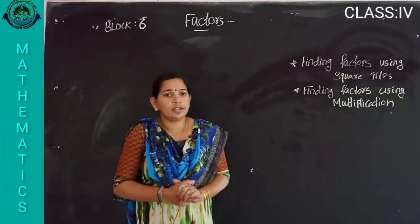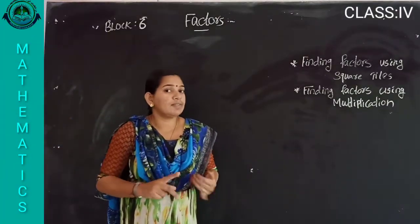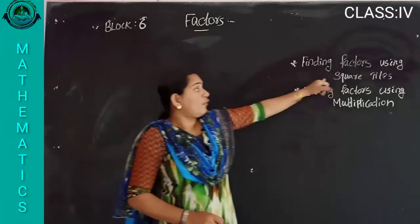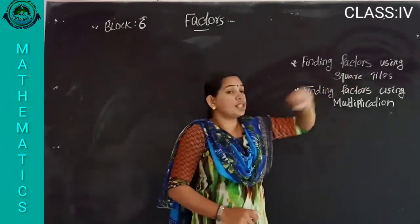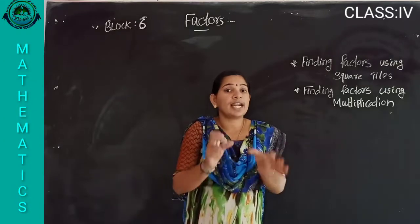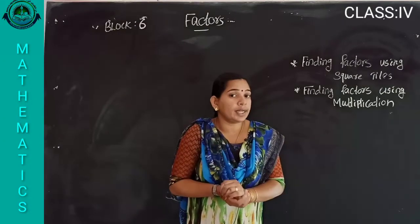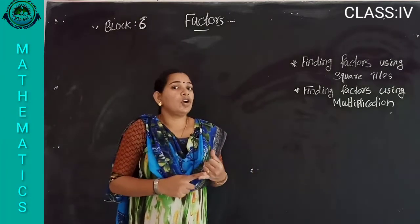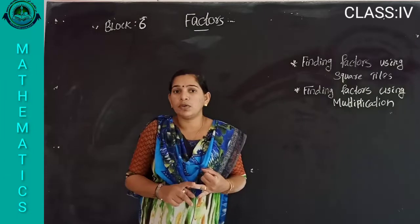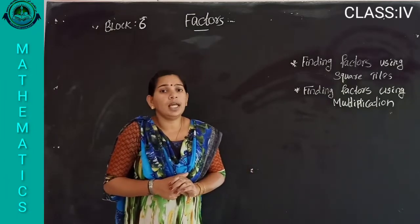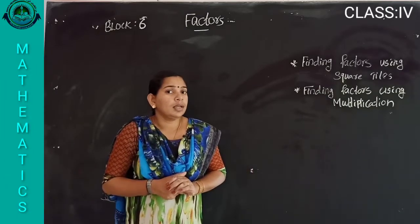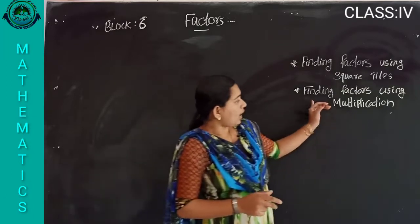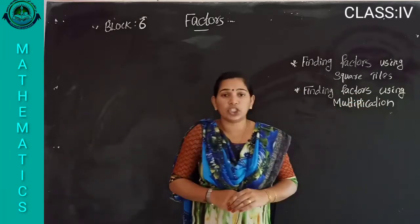In that section, first we checked how to find factors using square tiles. We arranged some square tiles and found the factors using number of columns and number of rows. The next method was finding factors using multiplication.